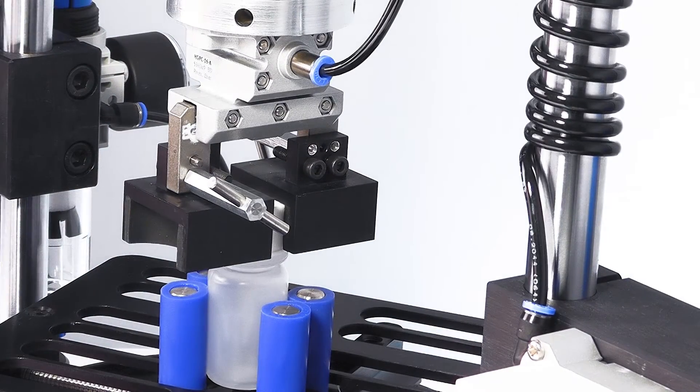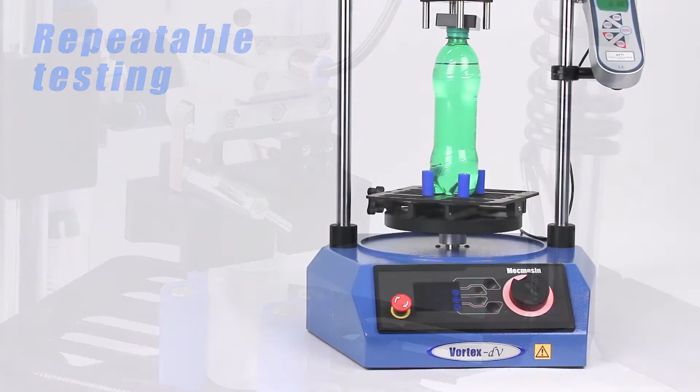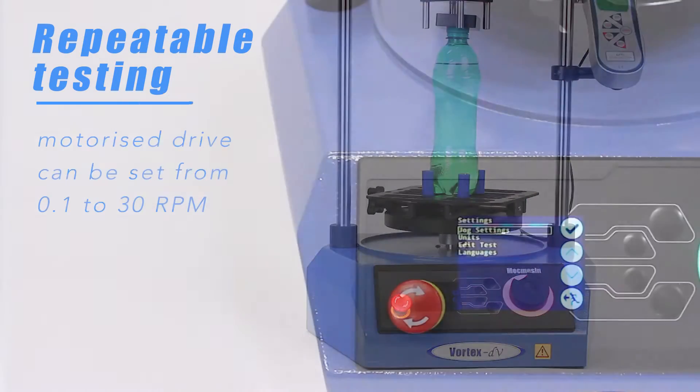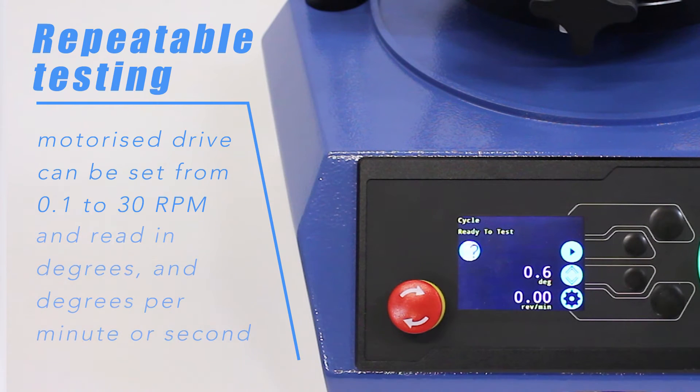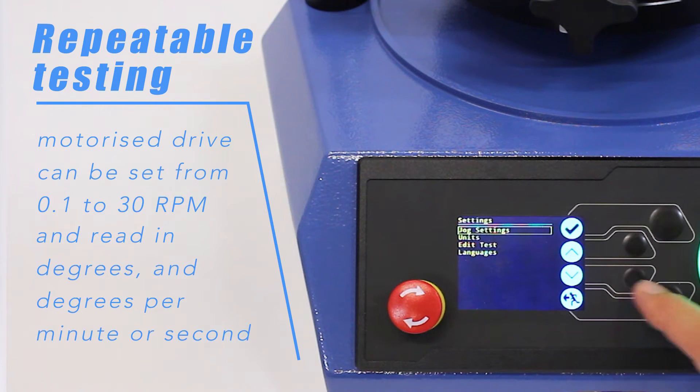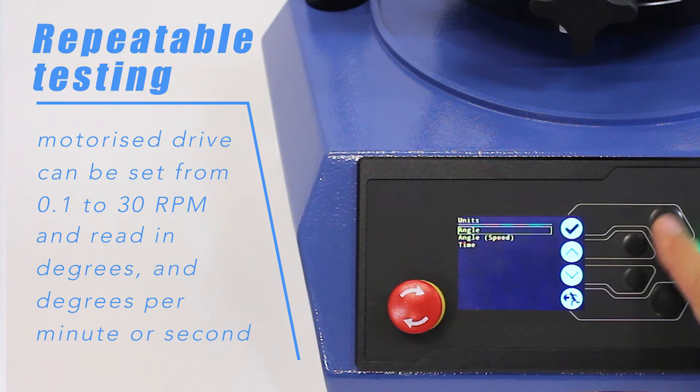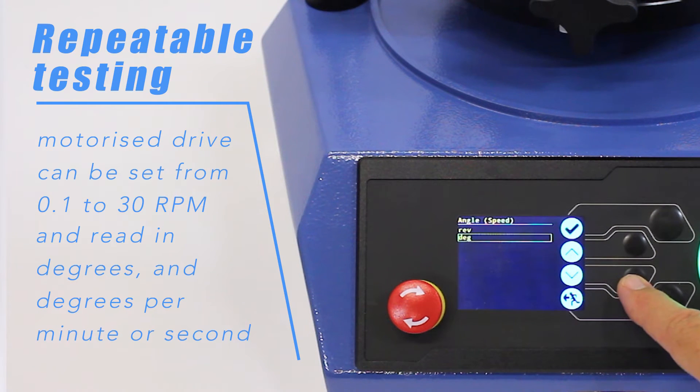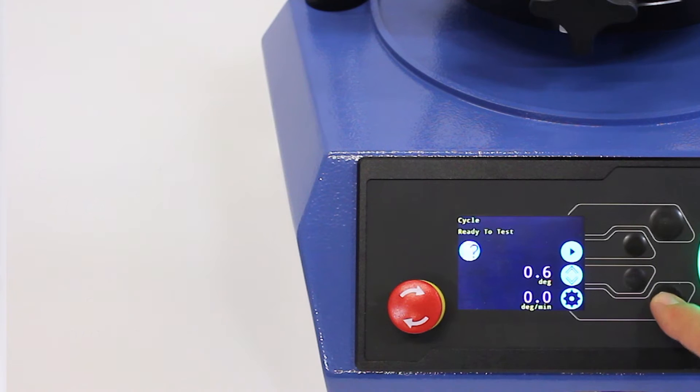To achieve repeatable results, the motorized drive rotates at a constant speed which can be set from 0.1 right up to 30 rpm. Depending on your preference, angular measurement can be reported in either revolutions or degrees. Speed may be set in either degrees or revolutions per minute or second.